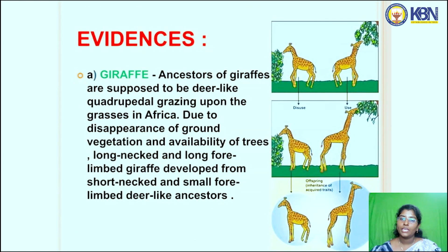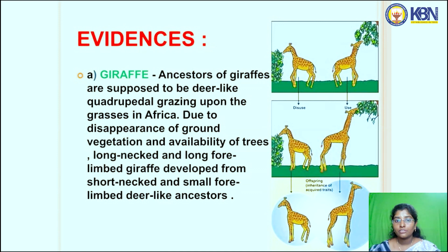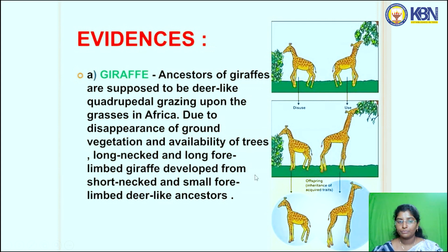As evidence, consider the giraffe. The ancestors of the giraffe are supposed to have been deer-like quadrupedal animals grazing on grasses in Africa. Due to the disappearance of ground vegetation and the availability of trees, long-necked and long-limbed giraffes developed from short-necked, small-limbed, deer-like ancestors. Lacking ground vegetation, they stretched their necks and four limbs toward leaves on trees — this is the evolution of the giraffe according to Lamarck.